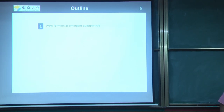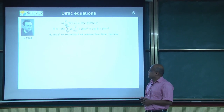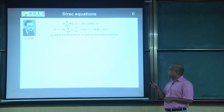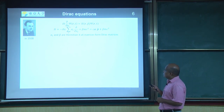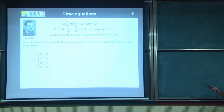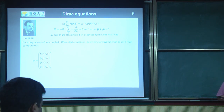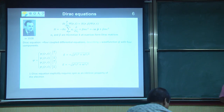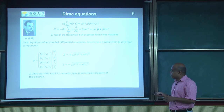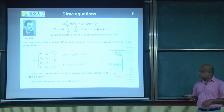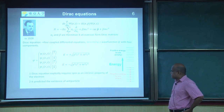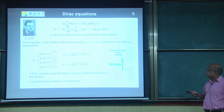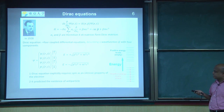Let me start with Weyl fermions. In quantum mechanics, most people have done the Dirac equation, which is a 4×4 matrix. All relativistic particles cannot be described by Schrödinger's equation, so here is the Dirac equation — a 4×4 matrix, essentially four coupled differential equations. The solution is a 4-component spinor: the first two components represent positive energy solutions and the next two represent negative energy solutions. Dirac equation explicitly represents the quantum property of spin, and also predicts negative energy solutions — anti-particles. Dirac assumed all negative energy solutions are completely filled — we call it the Dirac sea.